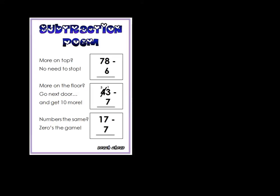Let's have a look at that second rule. More on the floor, go next door and get ten more. This one gets a little bit complicated, but once you know what you're doing, it's very easy. So for example, I'm going to write the sum or the subtraction 163 take away 136.